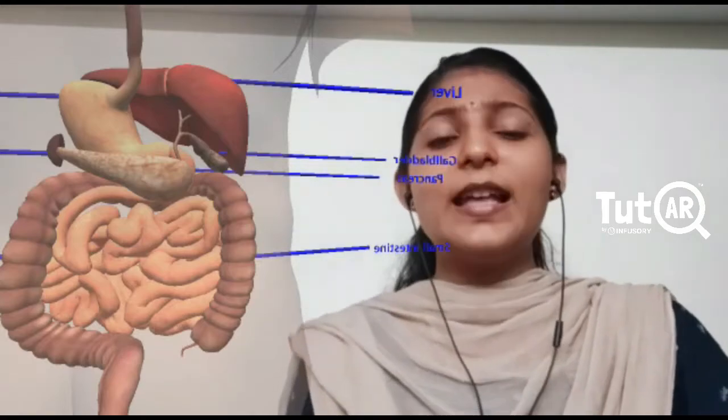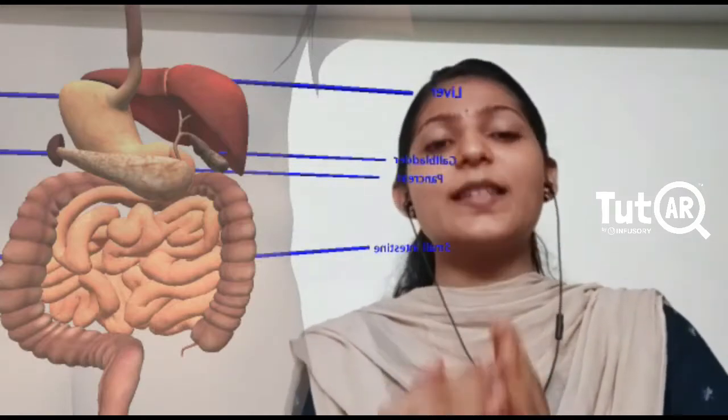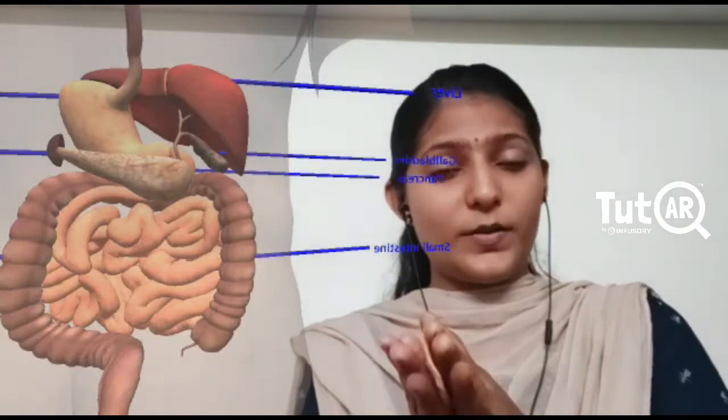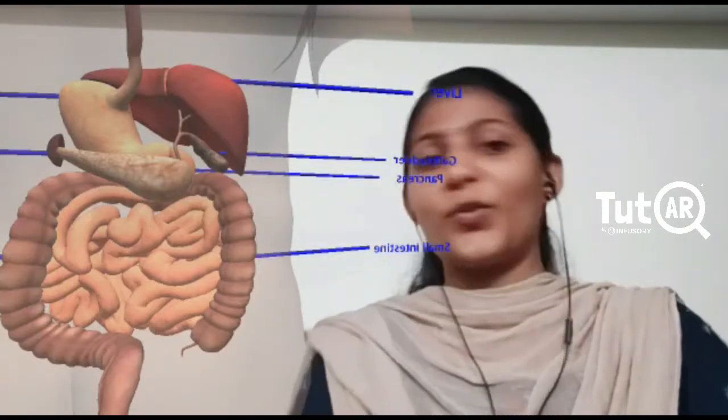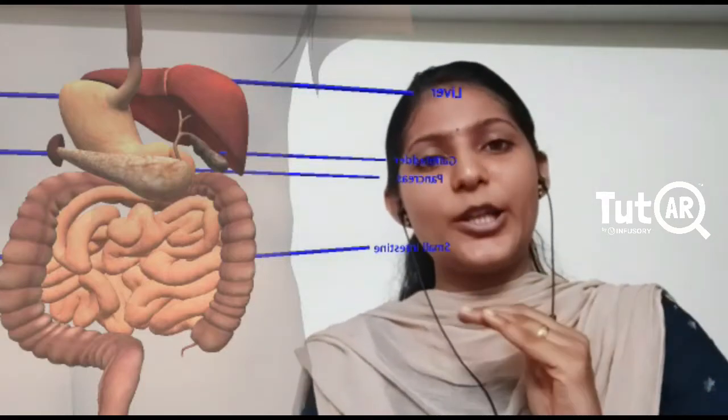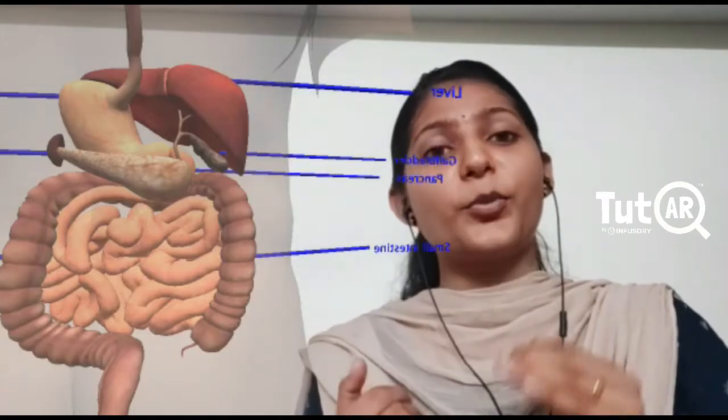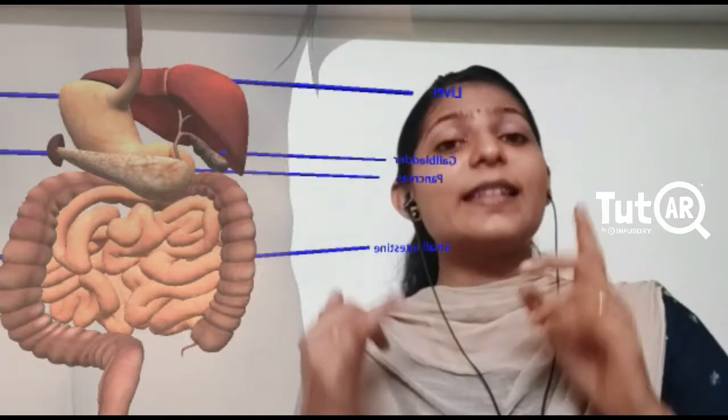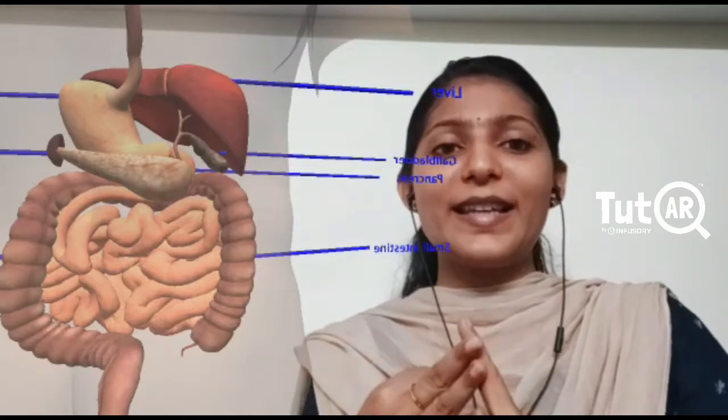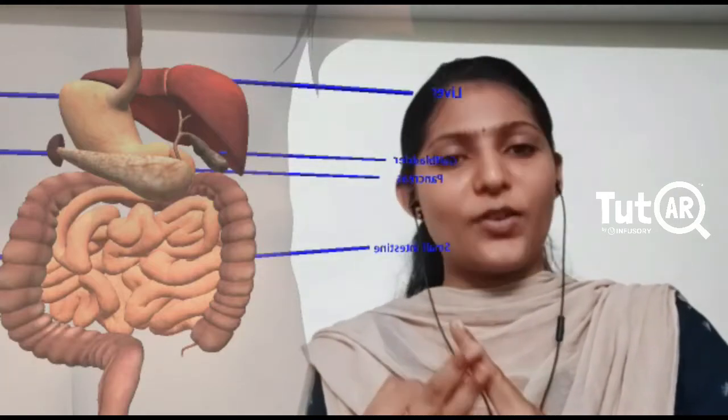So that's why we say the complete digestion happens in the small intestine. So when the complete digestion is over, what is the end product? What is the result? Now after the process of digestion is completely over, we have the proteins been converted to amino acids, the carbohydrates converted to glucose and the fatty acids converted to the glycerol.